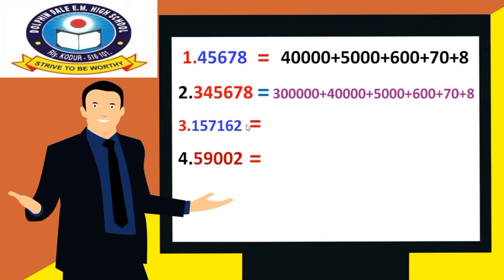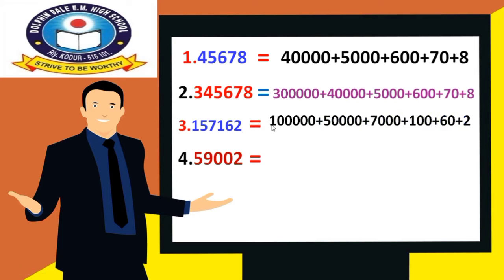See here: ones, tens, hundreds, thousands, ten thousands, one lakh. We have to write here: one lakh, plus fifty thousand, plus seven thousand, plus one hundred, plus sixty, plus two.